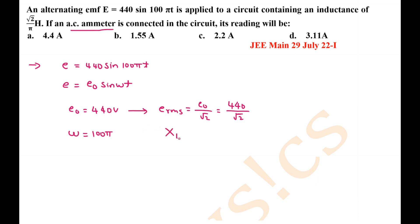Opposition here is an inductive reactance. What is the formula for inductive reactance? ωL. Omega is given as 100π, and L is √2 divided by π. So π cancels out and the value of XL is 100√2 ohm.